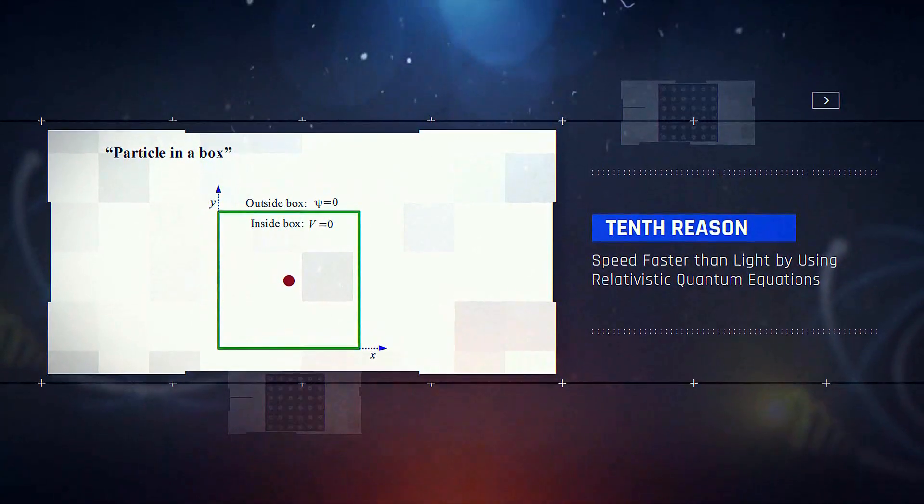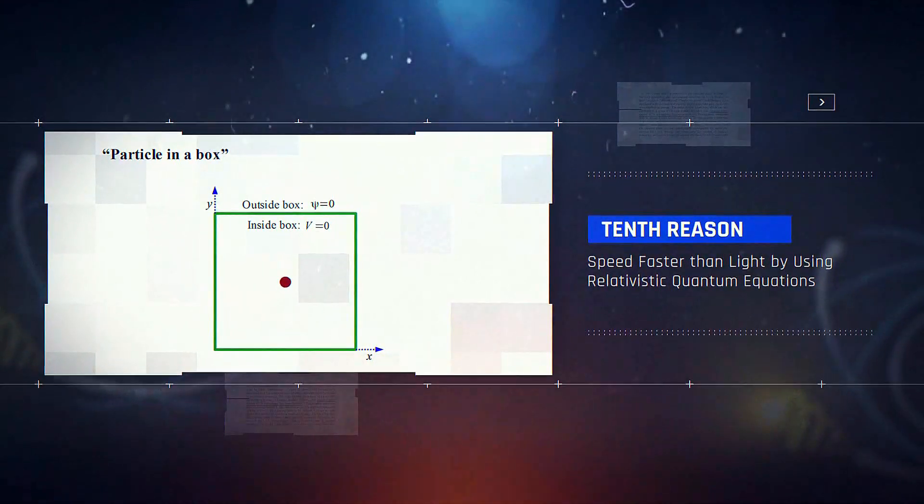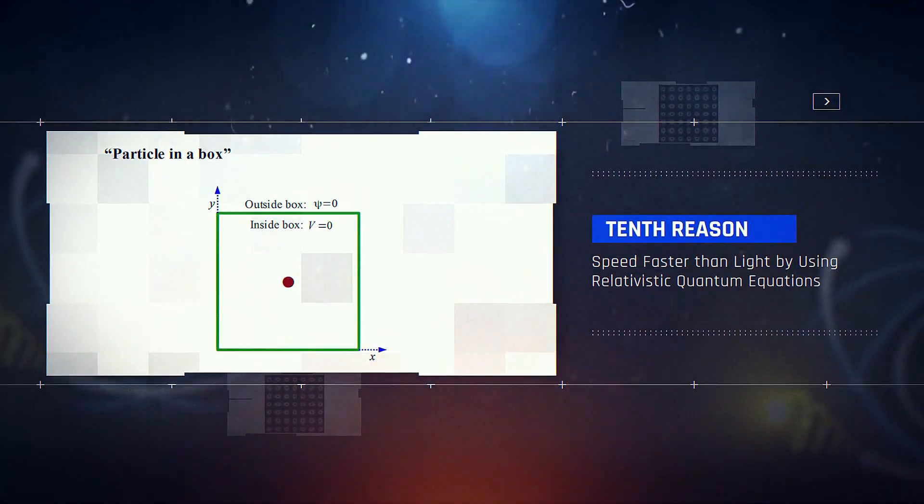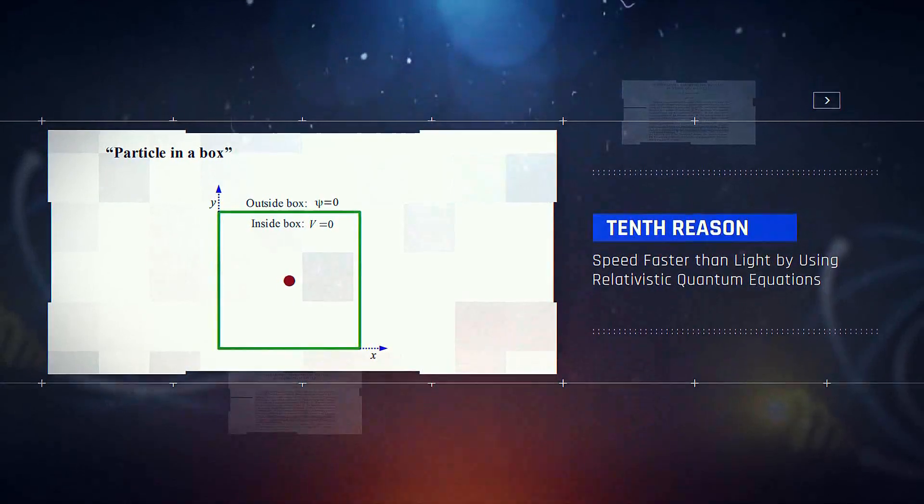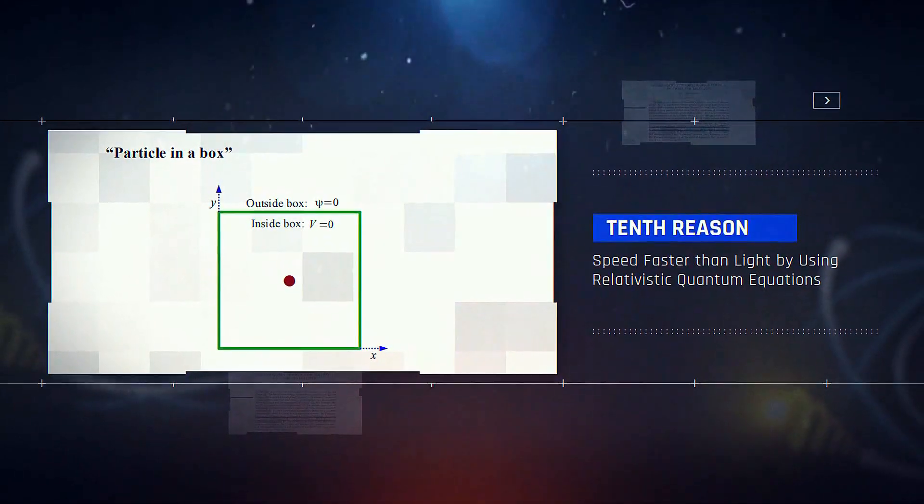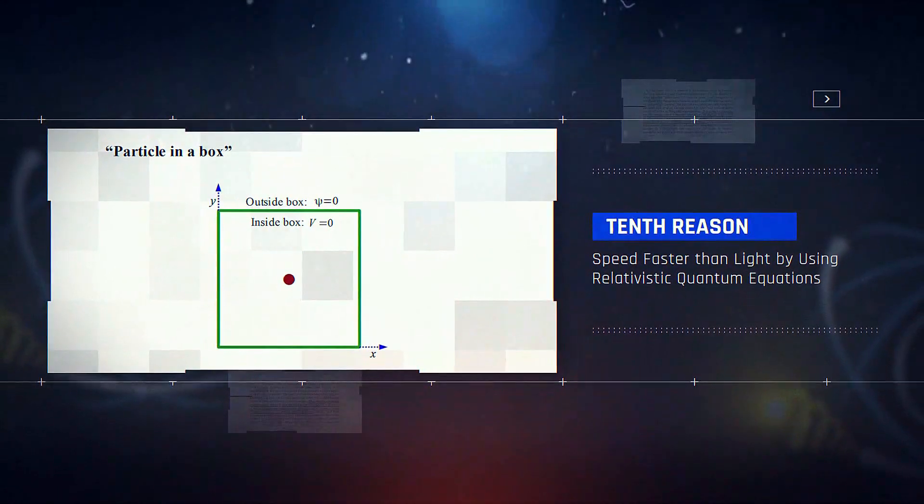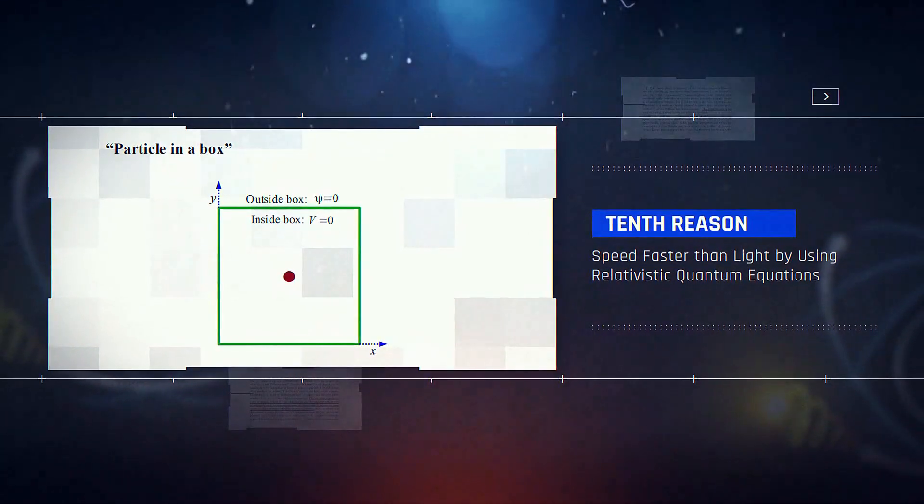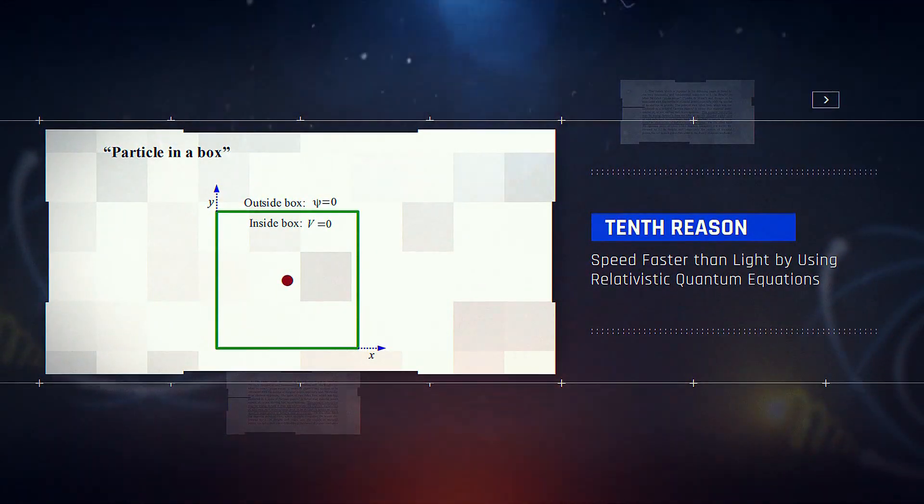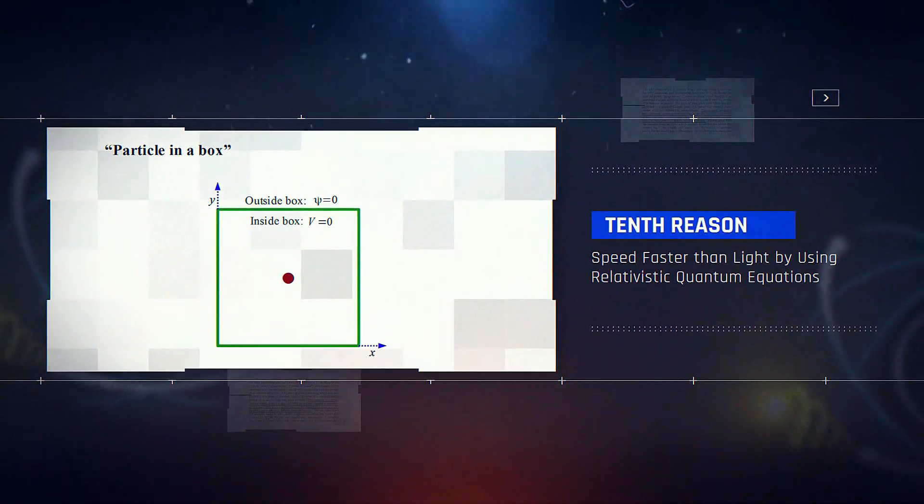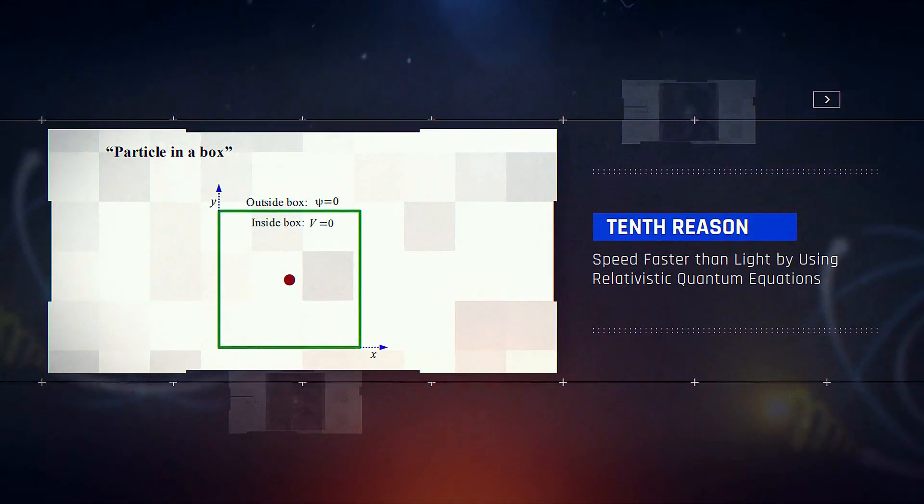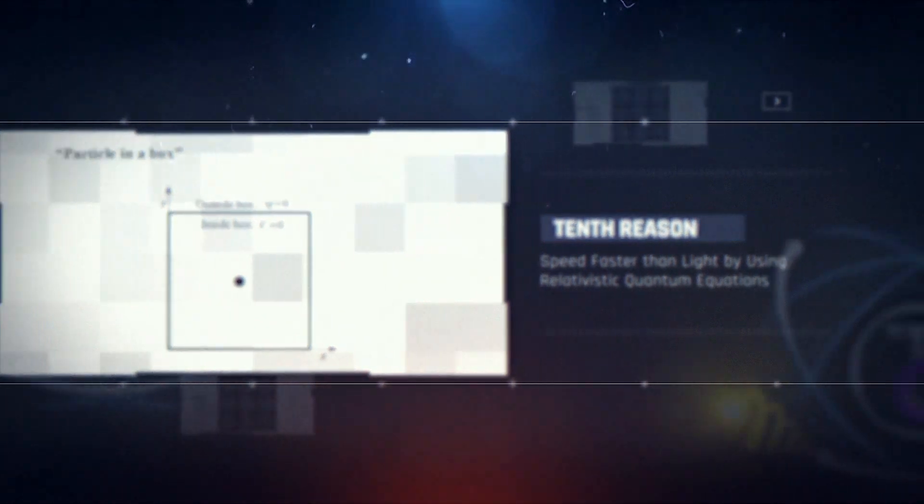Since this deficiency is not present in non-relativistic Schrödinger's equation, therefore the resulting deficiency is because of acknowledging the relativity, which suggests the existence of speed faster than light.